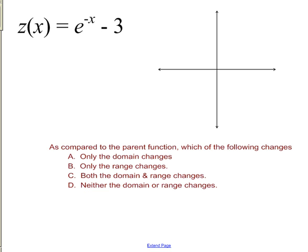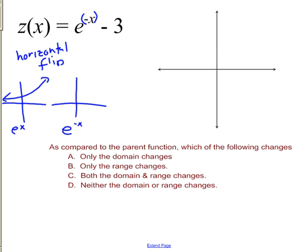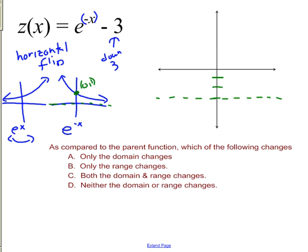Next: e to the negative x minus three. The negative is inside — you can think of putting parentheses there — so that is an inside negative, meaning a horizontal flip. E to the x flipped horizontally gives e to the negative x. Then the minus three is outside, so my graph goes down three. I take this graph with its asymptote at y equals zero and its point (0, 1), and I bring the asymptote down three units to y equals negative three.